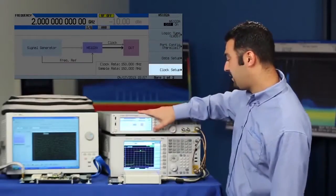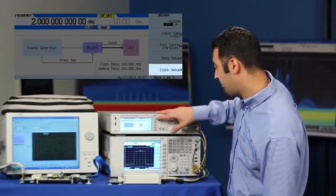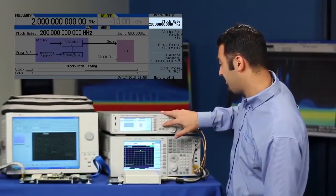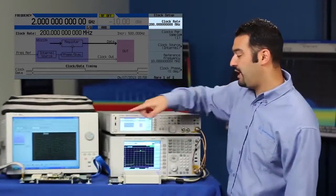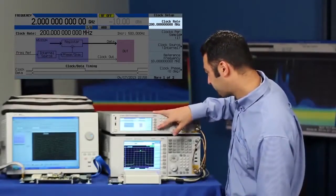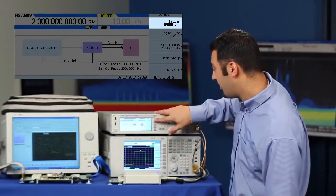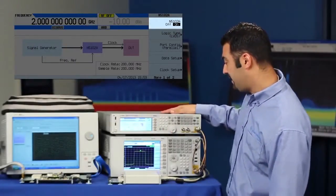The final step is to configure our clock. We're going to set our clock rate to 200 megahertz. And we're going to be sourcing the clock from the source into the device under test. Once we do that, we can turn on our digital interface module.